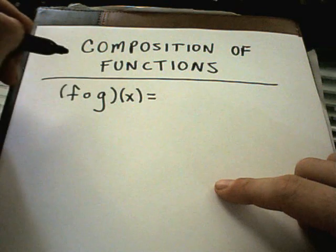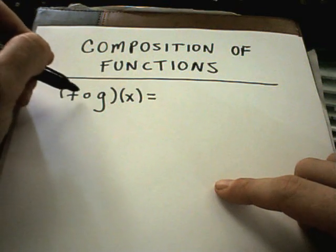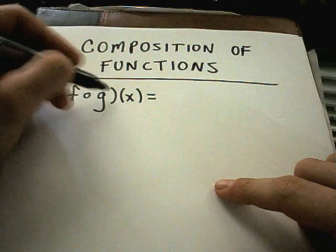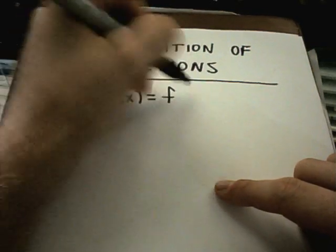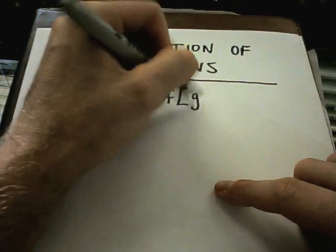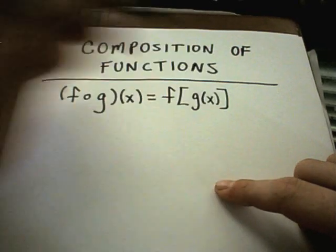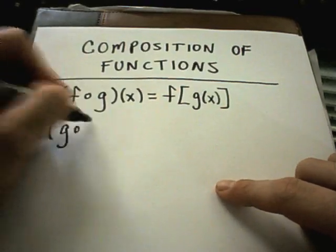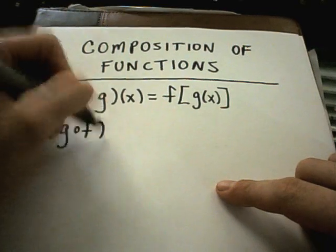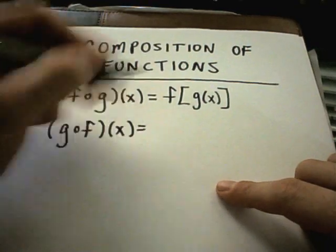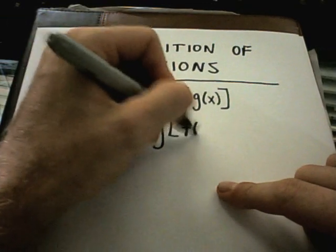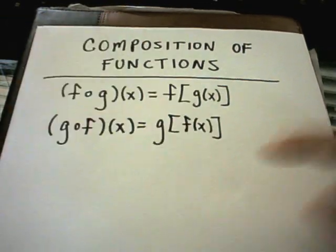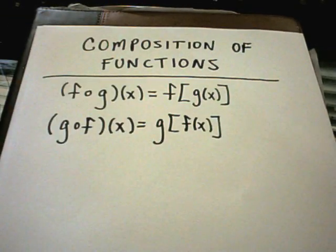It's read f of g of x, and what this notation means is you're basically plugging g of x inside of f of x. Likewise, g of f of x means take f of x and plug it inside of g.